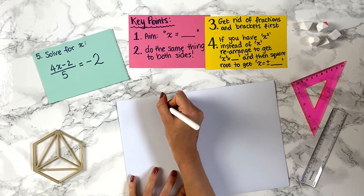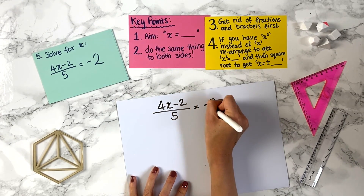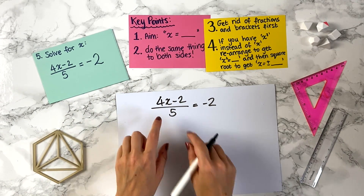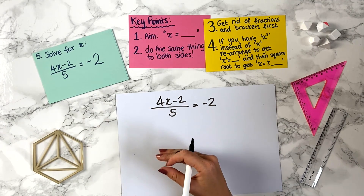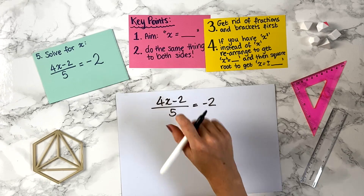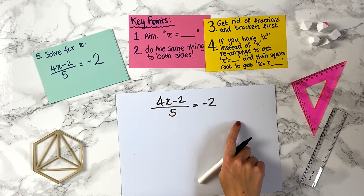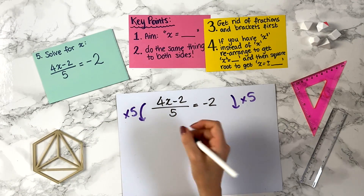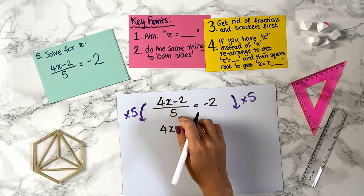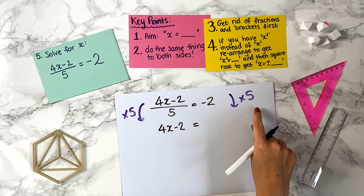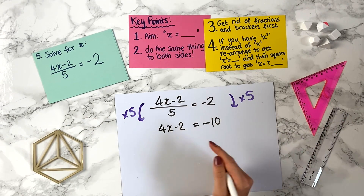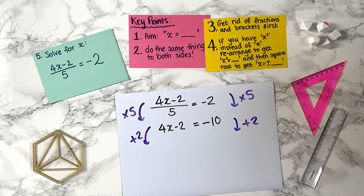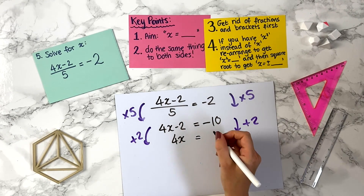Question 5: solve for x — (4x minus 2) divided by 5 equals minus 2. We have a fraction, so key point 3 says get rid of fractions first. To undo the division by 5, we multiply both sides by 5: the left hand side becomes 4x minus 2 (the division cancels), and minus 2 times 5 is minus 10. Now we collect x's on the left: to get rid of minus 2, we add 2 to both sides, giving 4x equals minus 10 plus 2, which is minus 8.